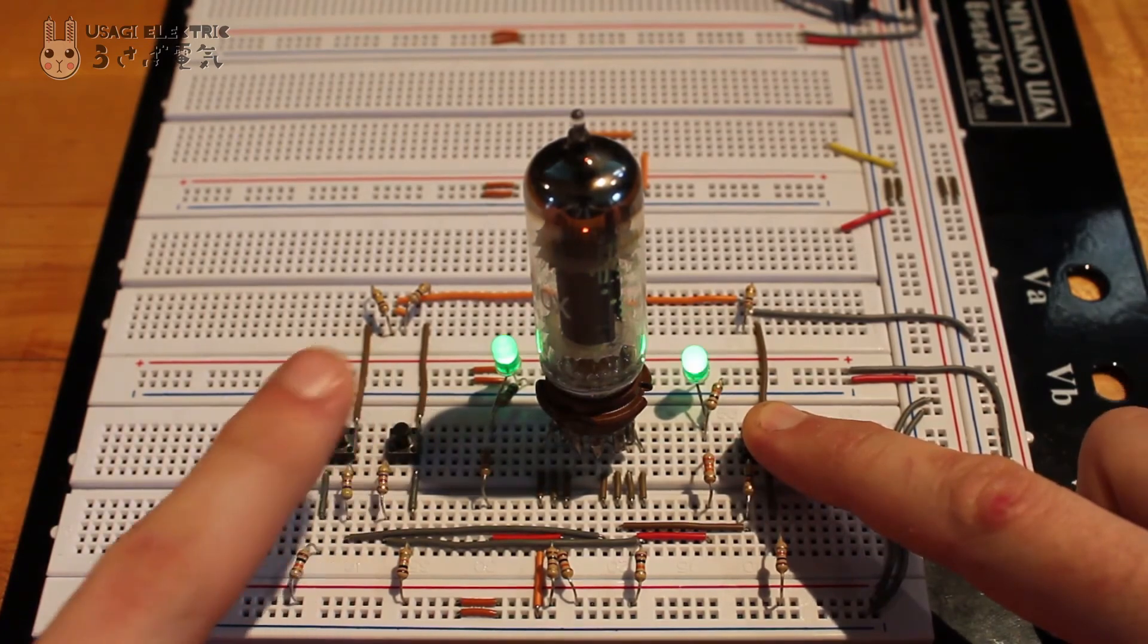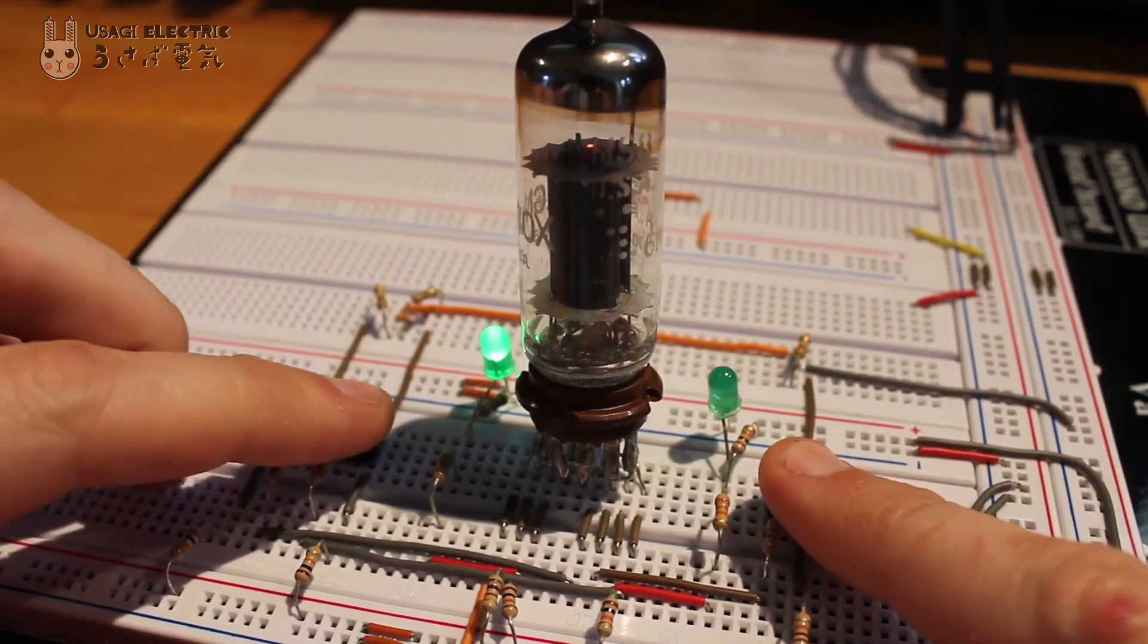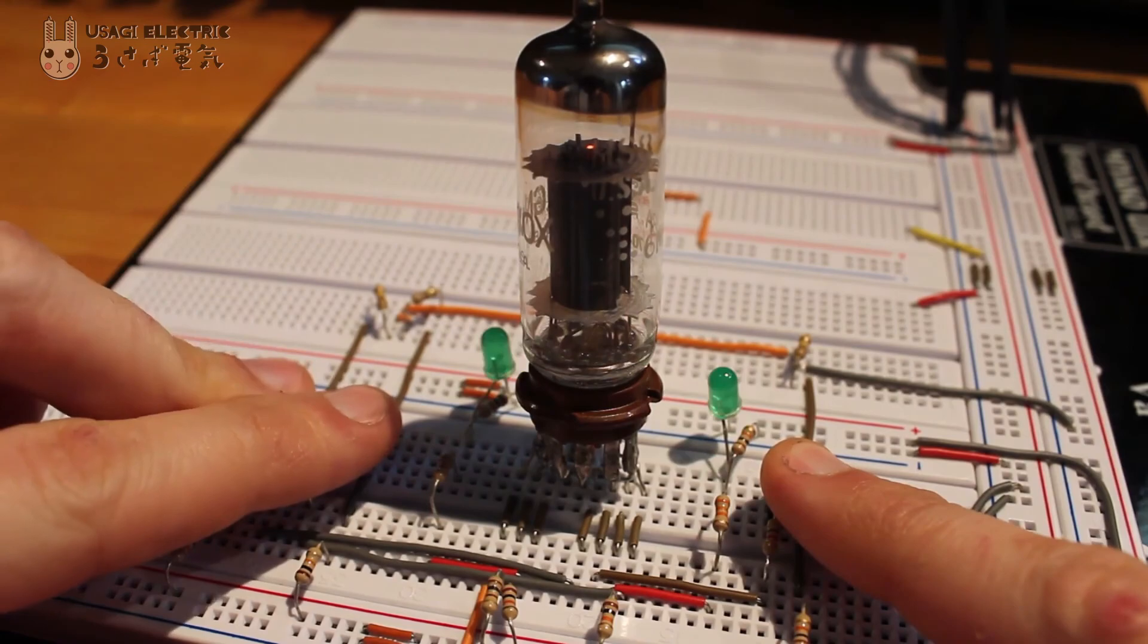However, pushing one of the top control grid buttons and the bottom control grid button allows current to flow, turning the LED off.